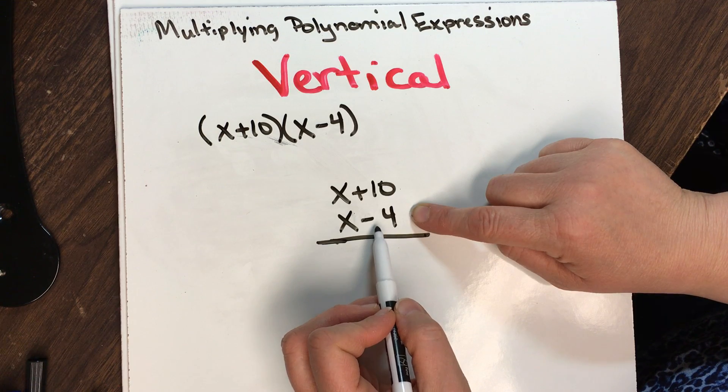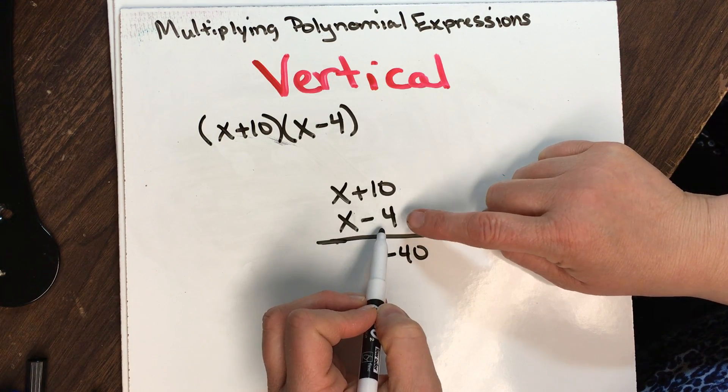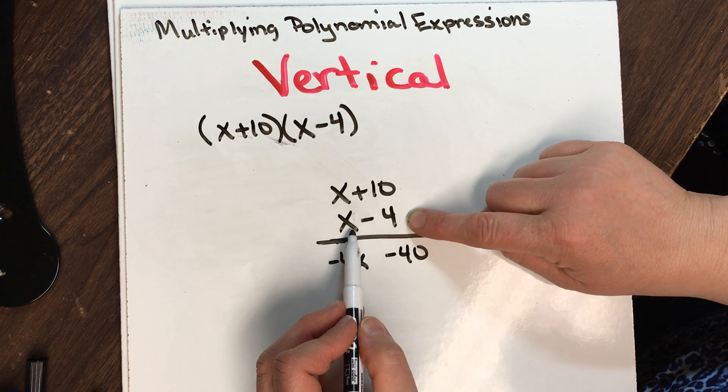Starting with my 4, I have negative 4 times 10 is a negative 40. Negative 4 times x is a negative 4x. Now I'm going to go down to my second line.